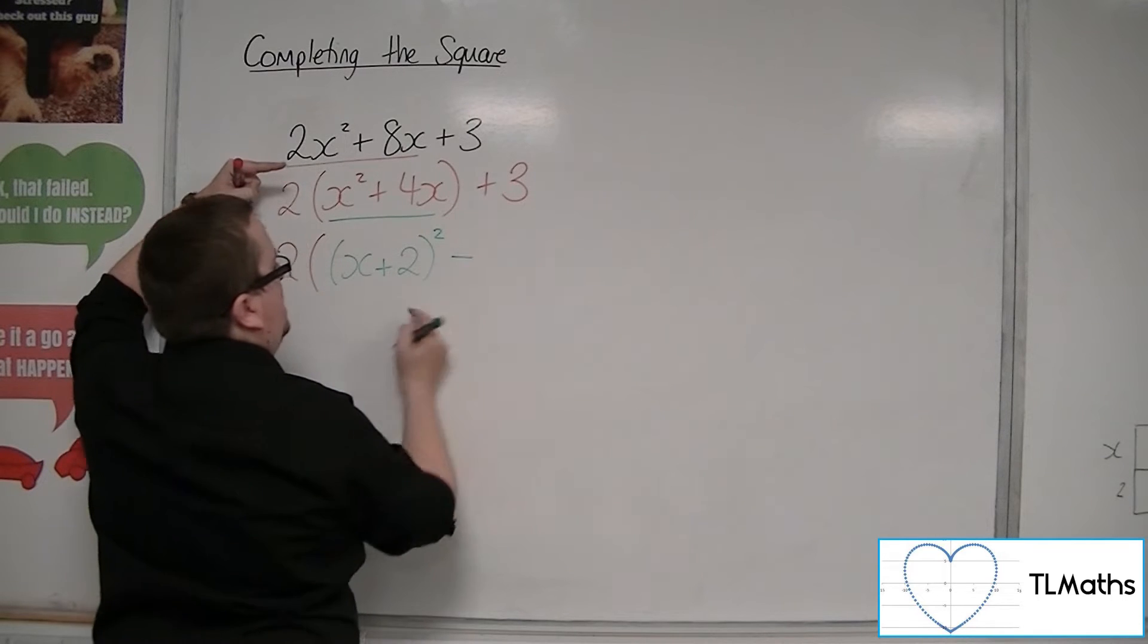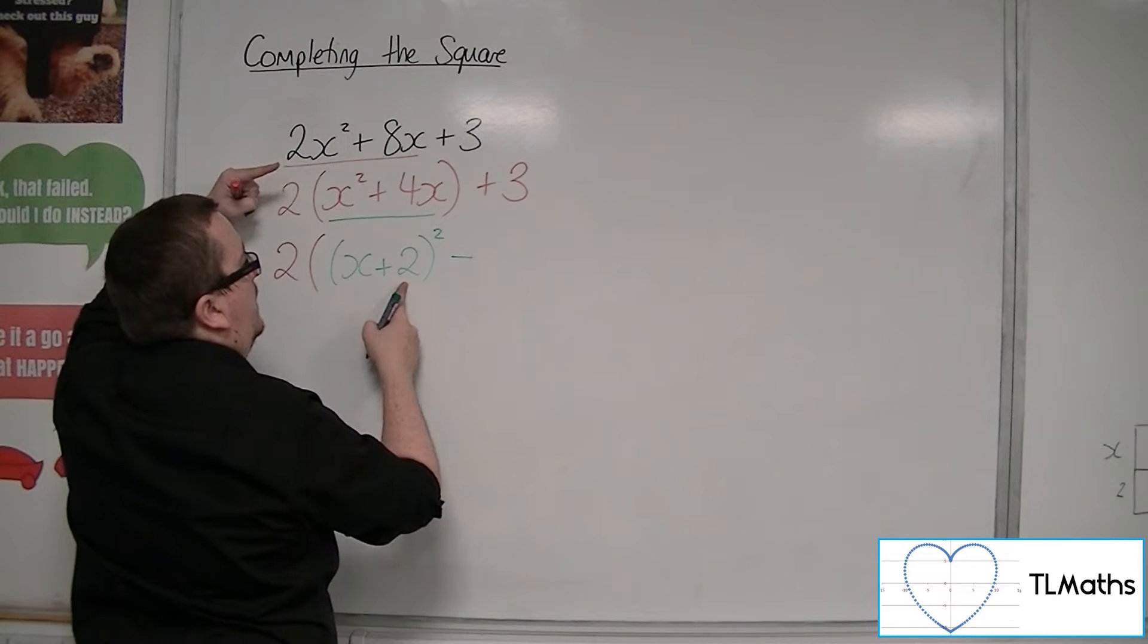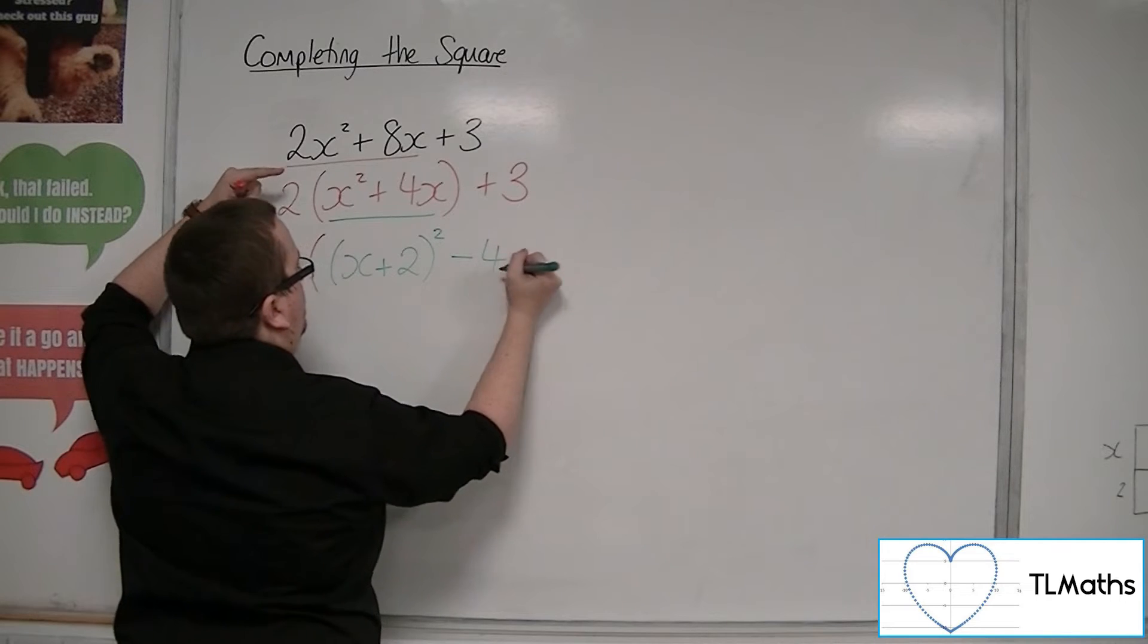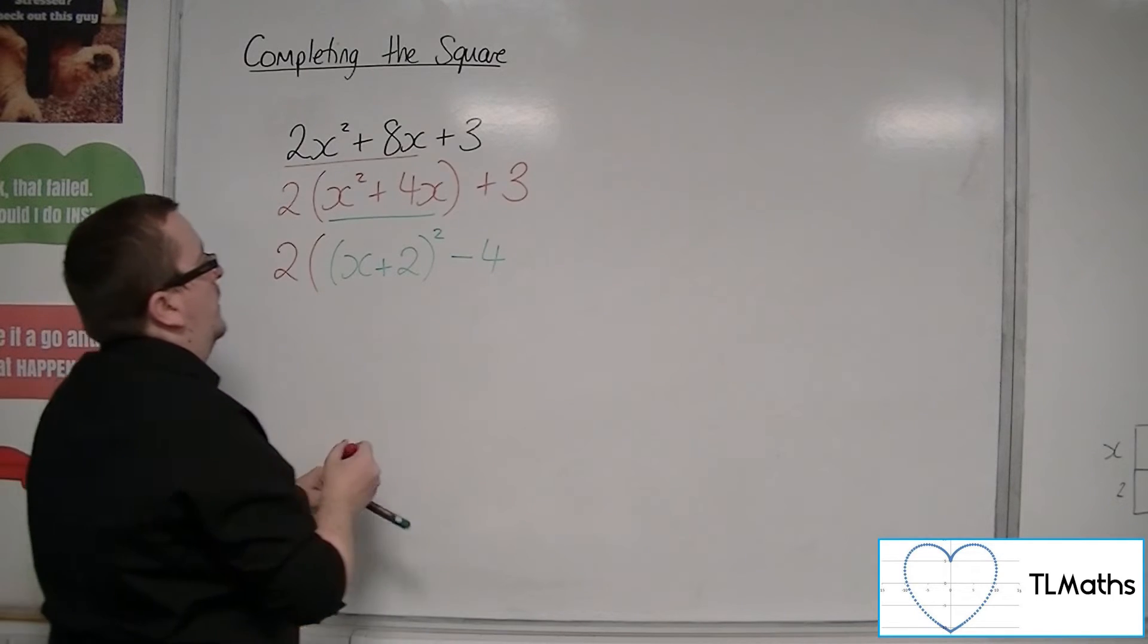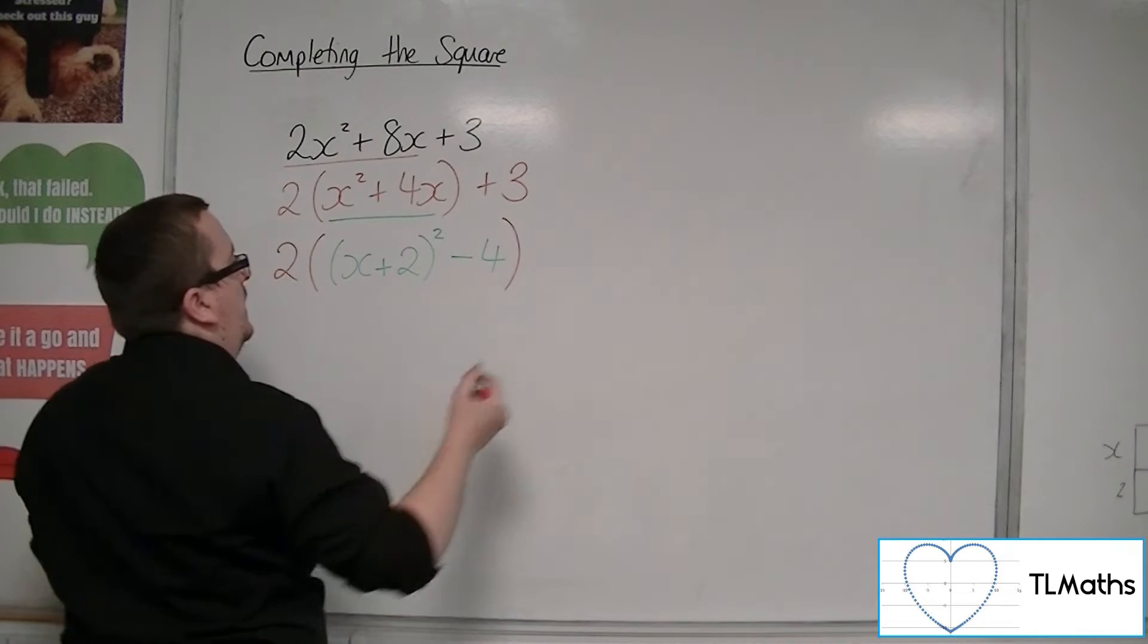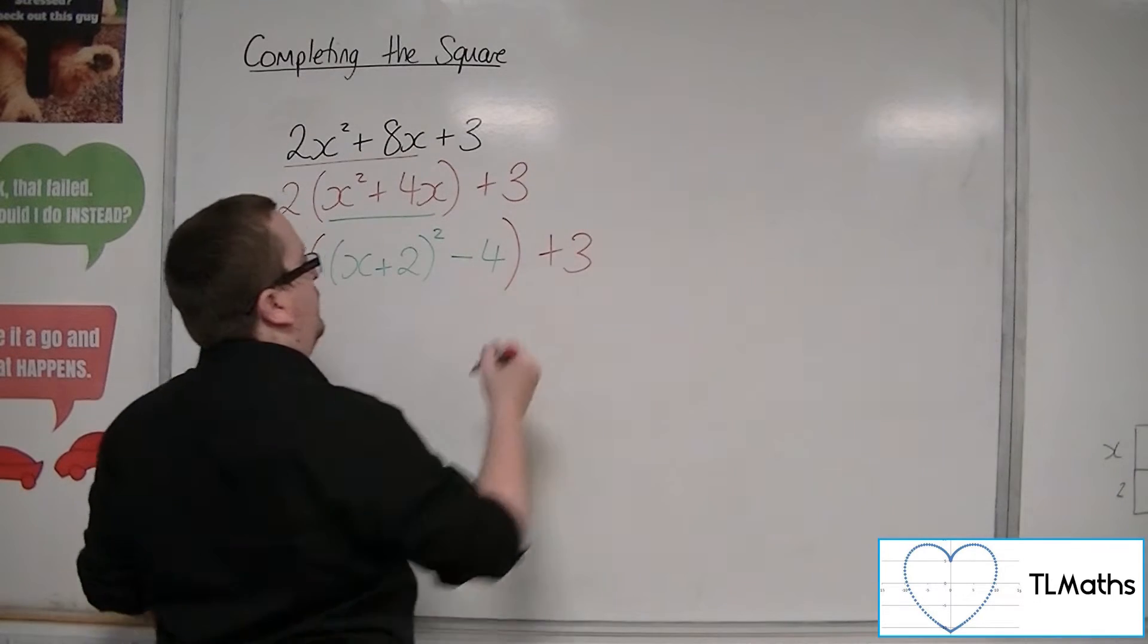And I always take away that number squared, so that's take away 4. Close the bracket, and I've still got this plus 3 on the outside.